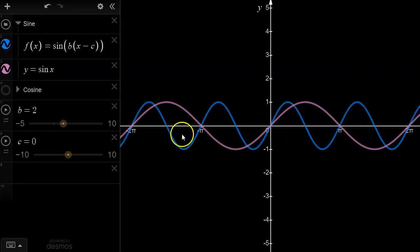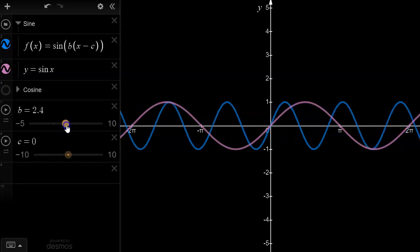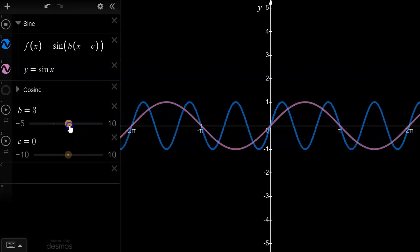You can see that you can fit two full cycles of sine 2x on the interval between 0 and 2pi. Now what if we graphed sine 3x? So for sine 3x, we're horizontally stretching the original graph by a factor of a third, and now you can see that you can fit exactly three cycles on the interval between 0 and 2pi.